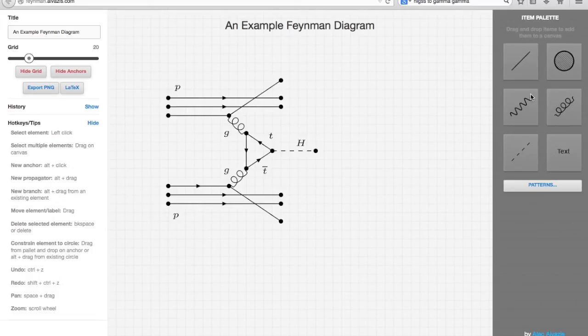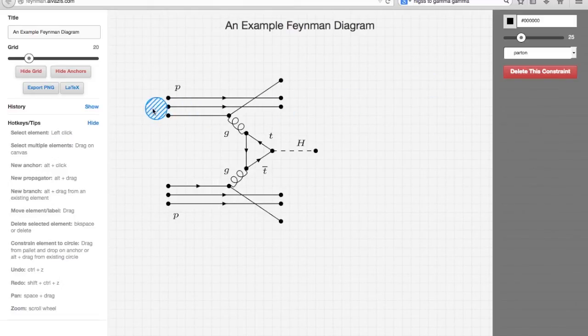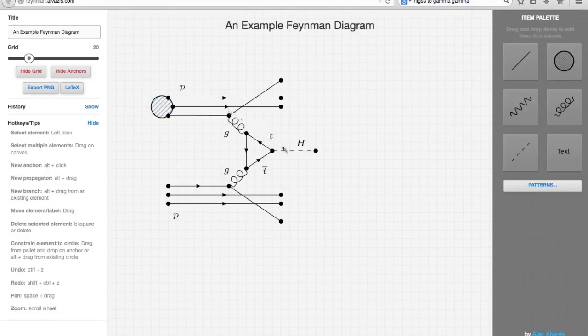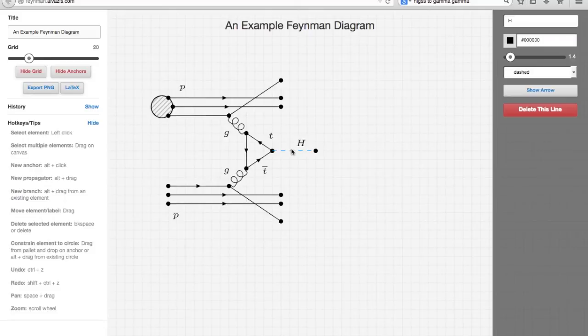The sidebar on the right serves two purposes. If there is no element selected, it displays the item palette, where you can drag and drop items onto the canvas. If an element is selected, the sidebar provides various configuration options for that element.